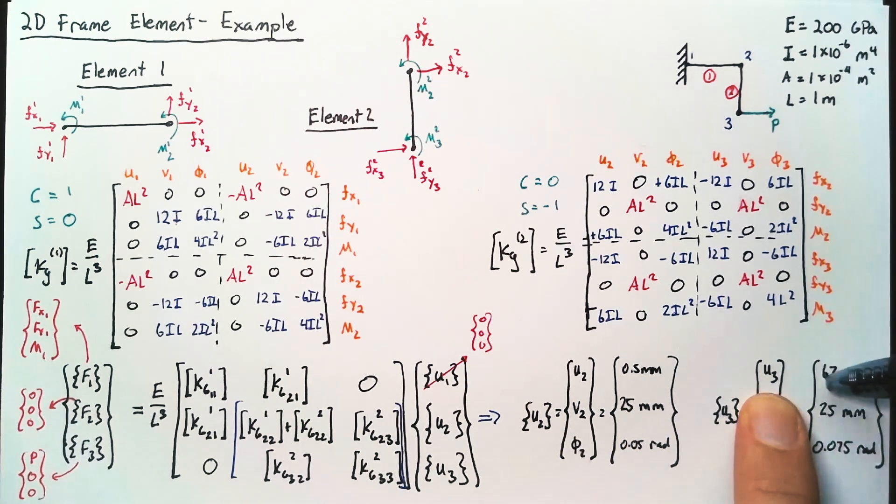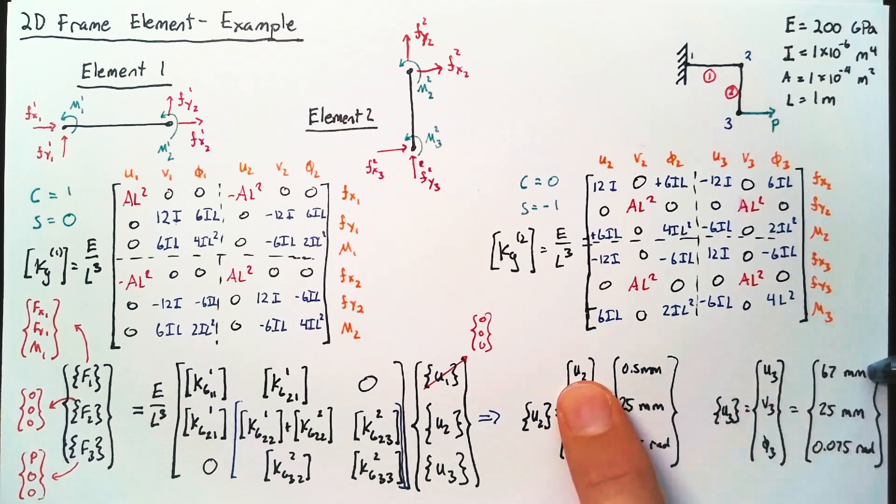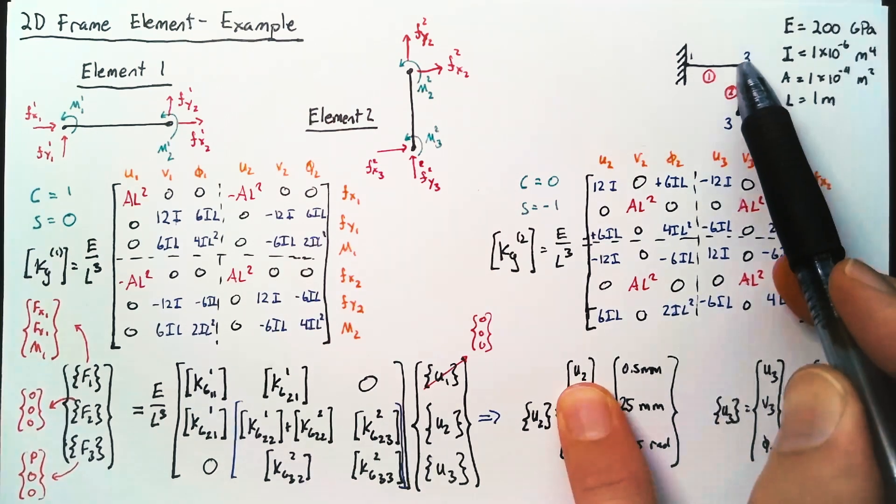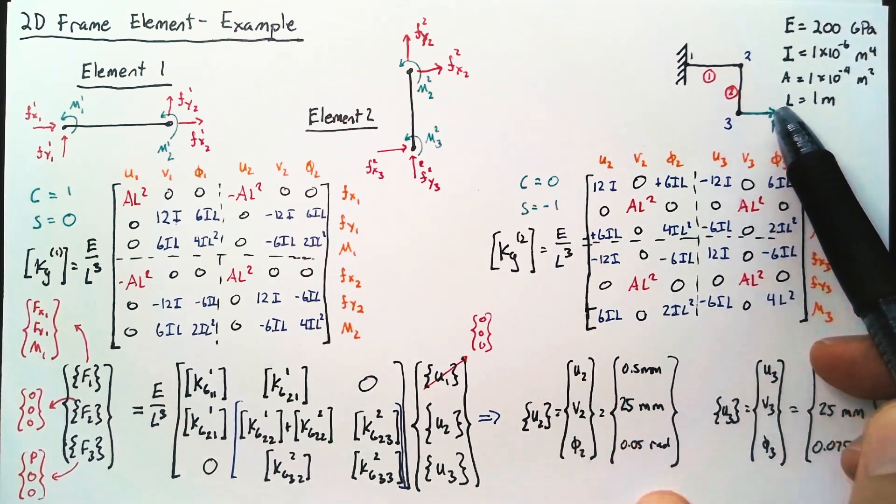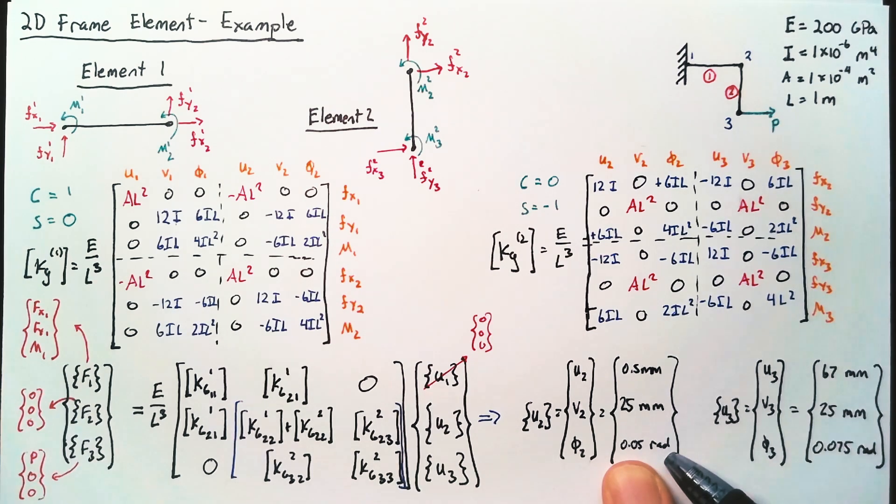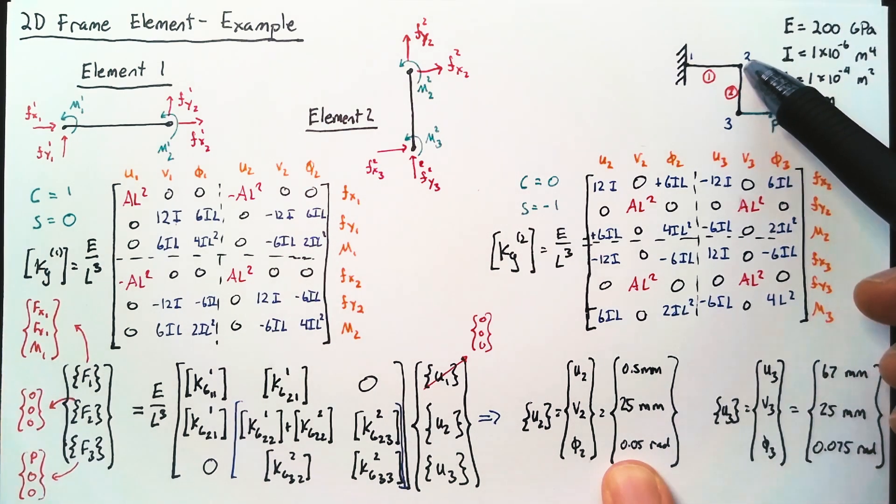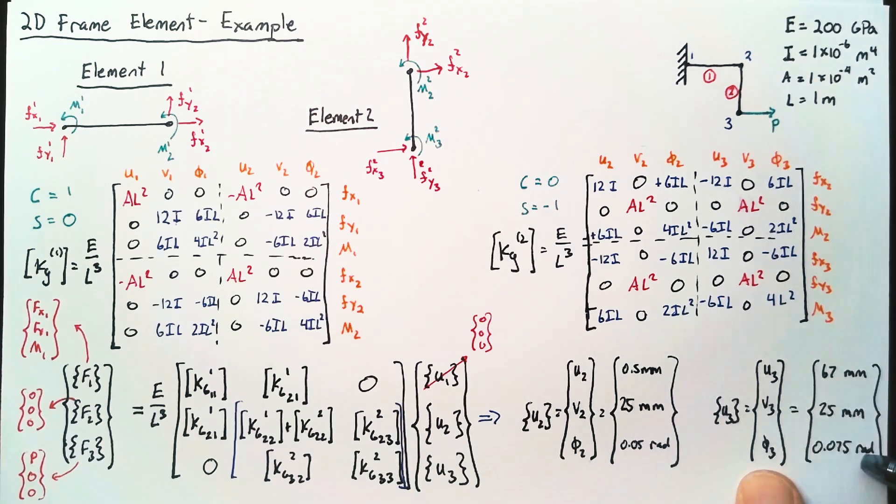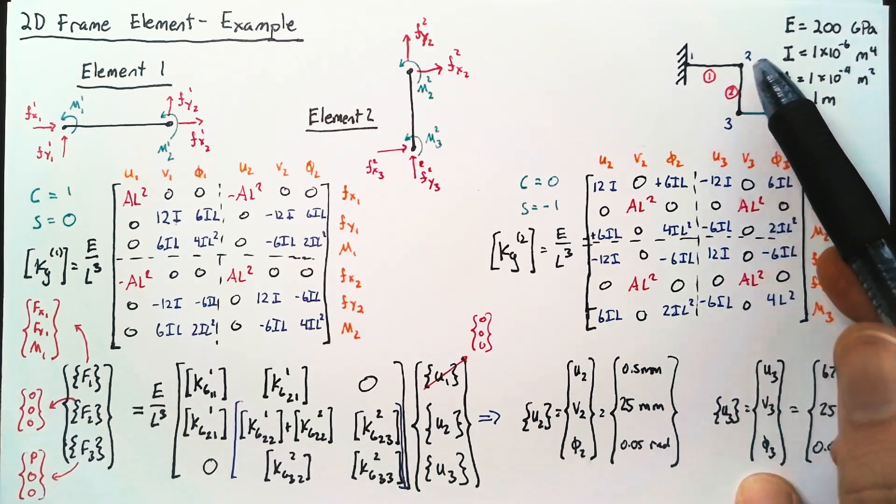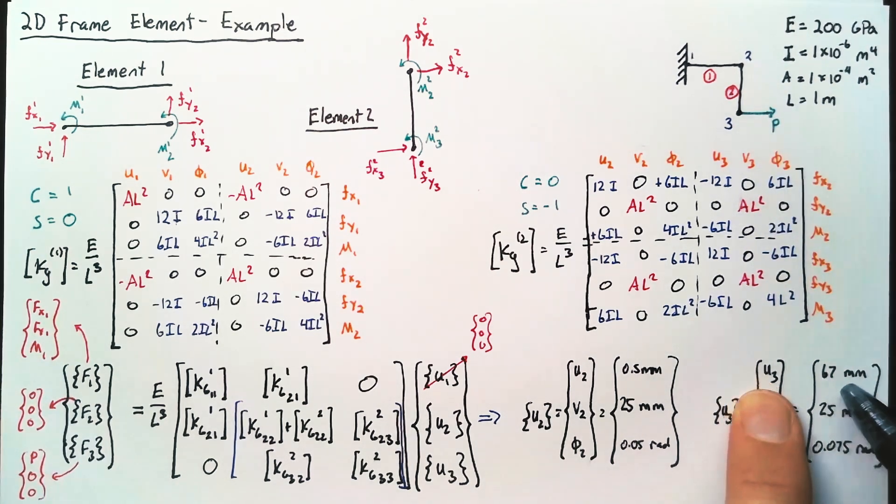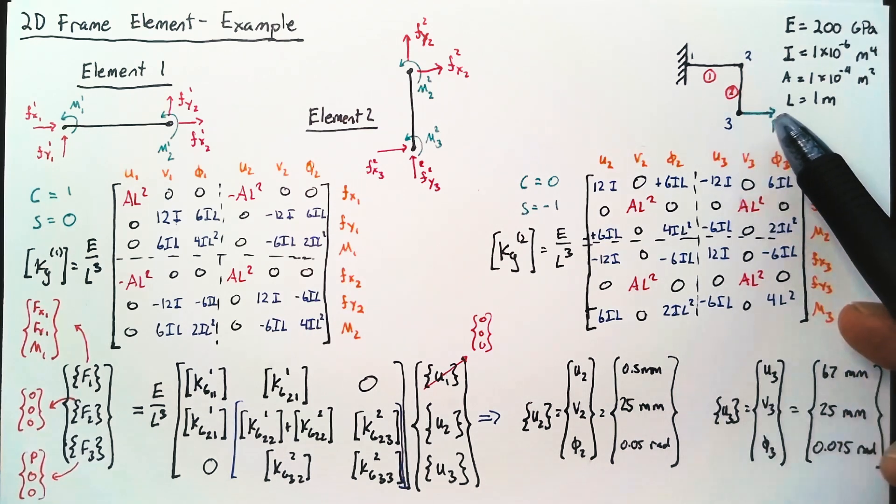However, we see a large displacement in U3 compared to U2. And that's because this beam is able to bend on top of the rotational displacement that already exists at node 2. And so we see that rotational displacement increases. This is bending more. And then it's also moving significantly outward.